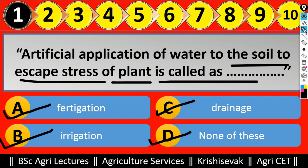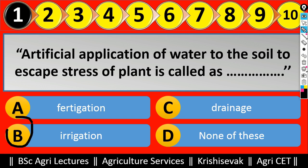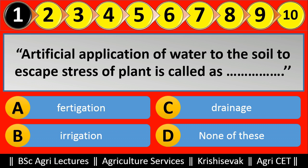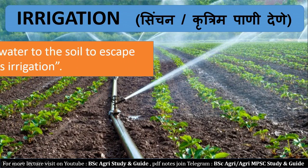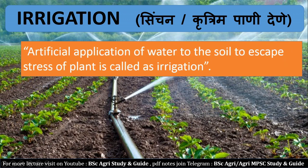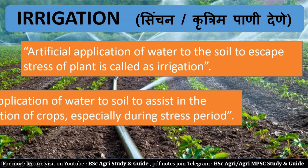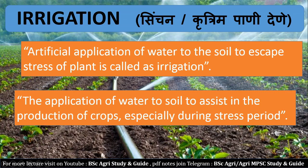The right answer is irrigation. Artificial application of water to the soil to escape stress of plants is called as irrigation. We have studied this in lecture number two of Agronomy second, where two definitions were covered.